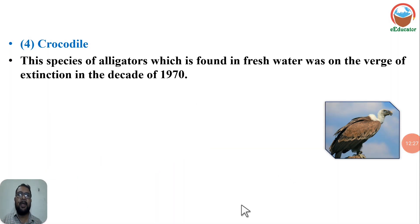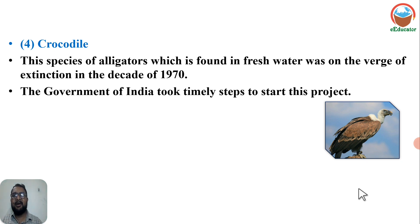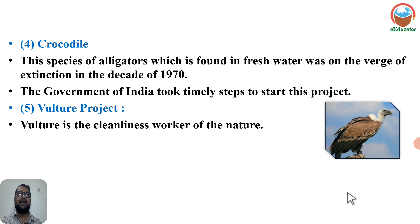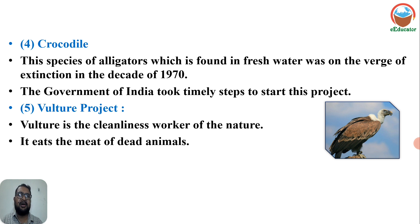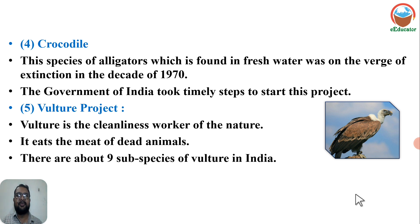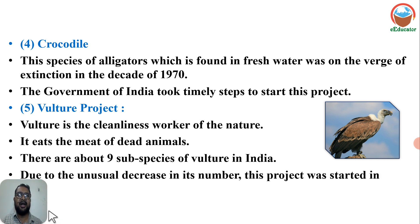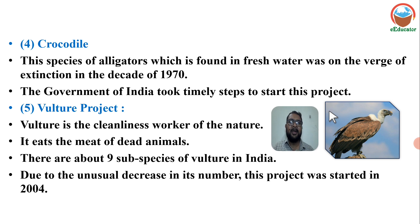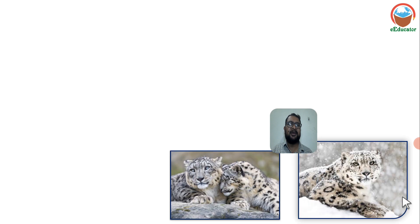Crocodile Project: The species of alligators found in fresh water was on the verge of extinction in the decade of 1970s, so the Government of India took timely steps to start the Crocodile Project. Vulture Project: The vulture is considered a cleanliness worker of nature — it removes dirt from the environment by eating the meat of dead animals. There are about nine subspecies of vulture in India. Due to an unusual decrease in numbers, the Vulture Project was started in 2004.